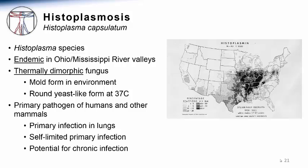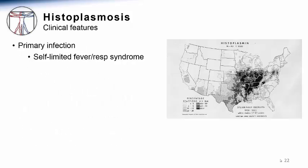This map could be superimposed over a similar map of environmental sampling in the different counties looking for where the fungus could be isolated. Similar to other thermally dimorphic fungi, Histoplasma species grow as molds in the environment and in a round yeast-like form in the human body. They are primary pathogens causing an initial primary respiratory infection that is often self-limited, but with the potential for chronic infection.